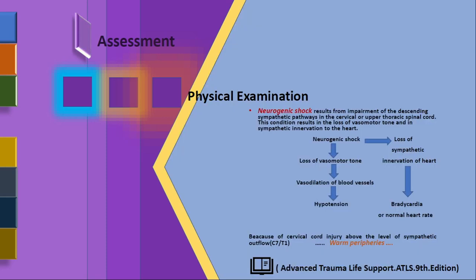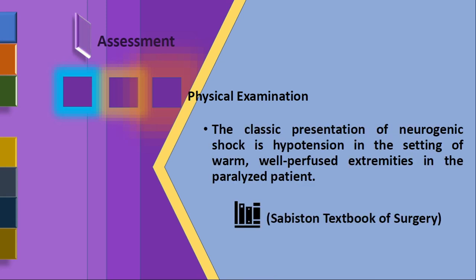Neurogenic shock results from impairment of the descending sympathetic pathway in the cervical or upper thoracic spinal cord. This causes loss of vasomotor tone and sympathetic inhibition to the heart, leading to bradycardia and hypotension. Neurogenic shock is seen with injury to the cervical or upper thoracic spine. The classic presentation is hypotension with warm peripheral extremities — warm extremities on physical examination may be a symptom of neurogenic shock.